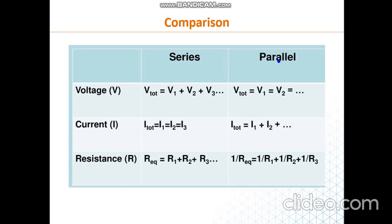This table gives a nice summary of what we discussed. For series circuits, the voltage gets divided between resistors while the current is the same, since there is only one path. The opposite holds for parallel: the voltage across resistors in parallel is the same, while the current gets divided between the branches. Here are the formulas to calculate equivalent resistance in series and in parallel.